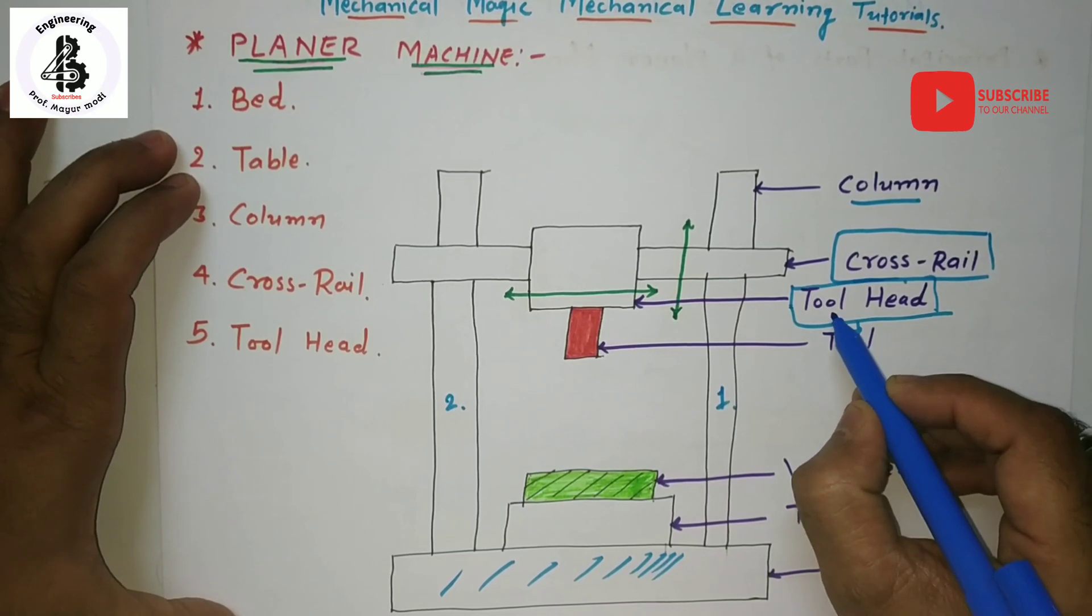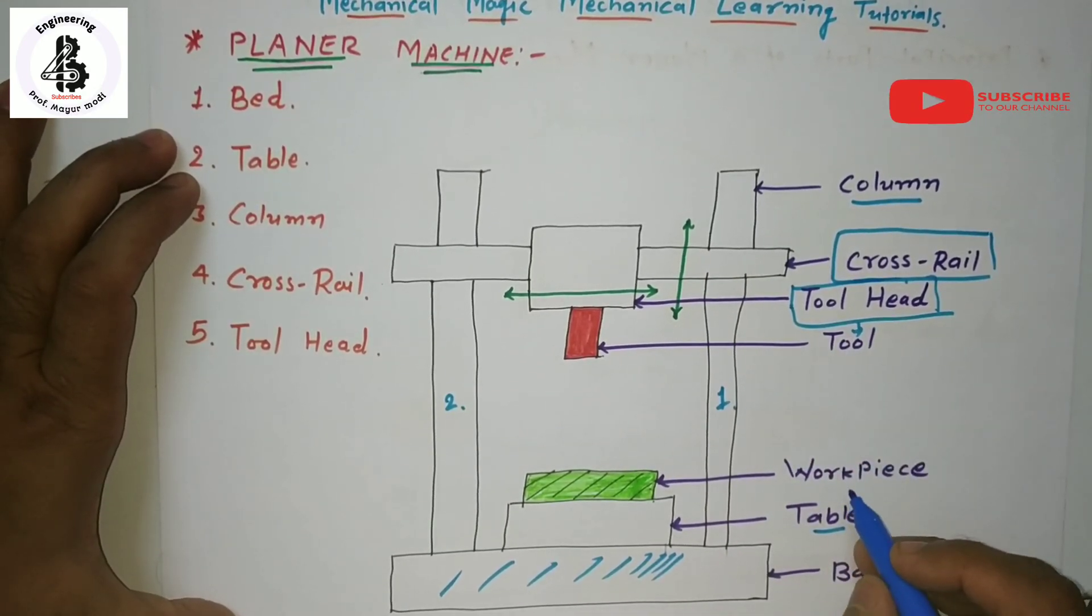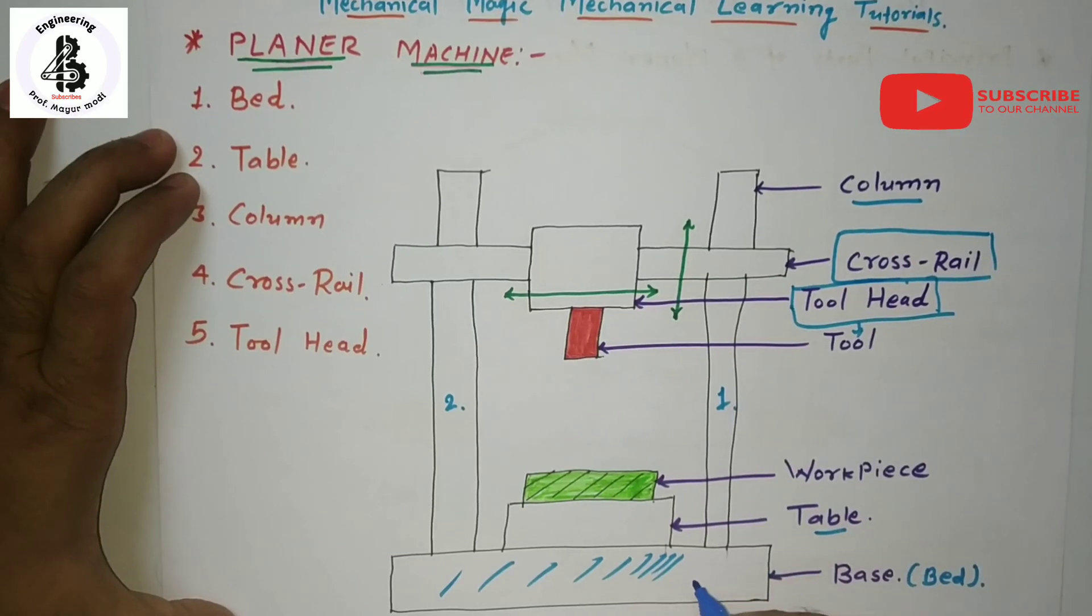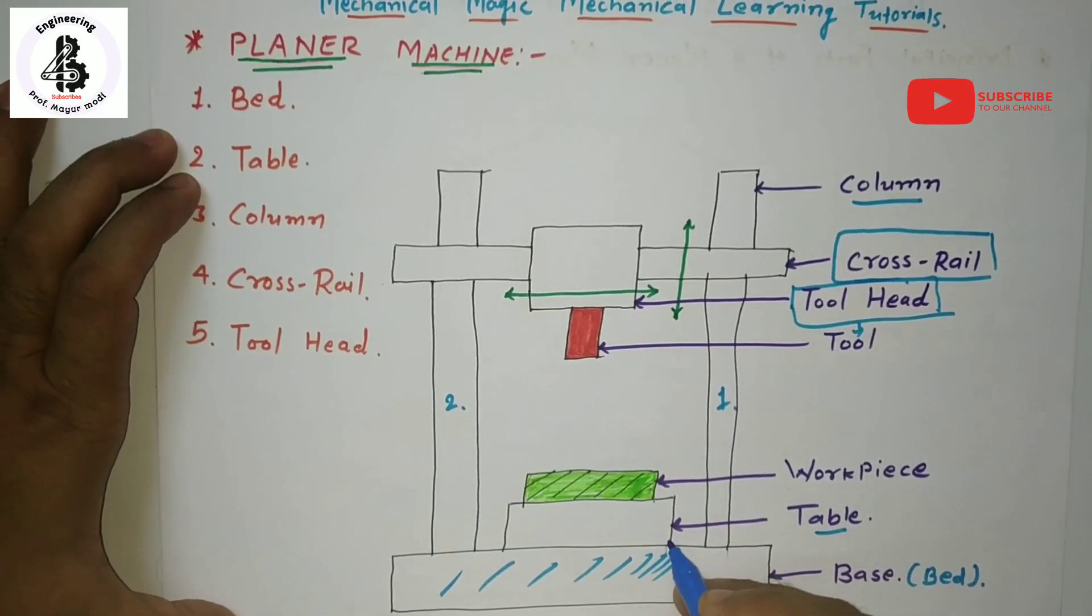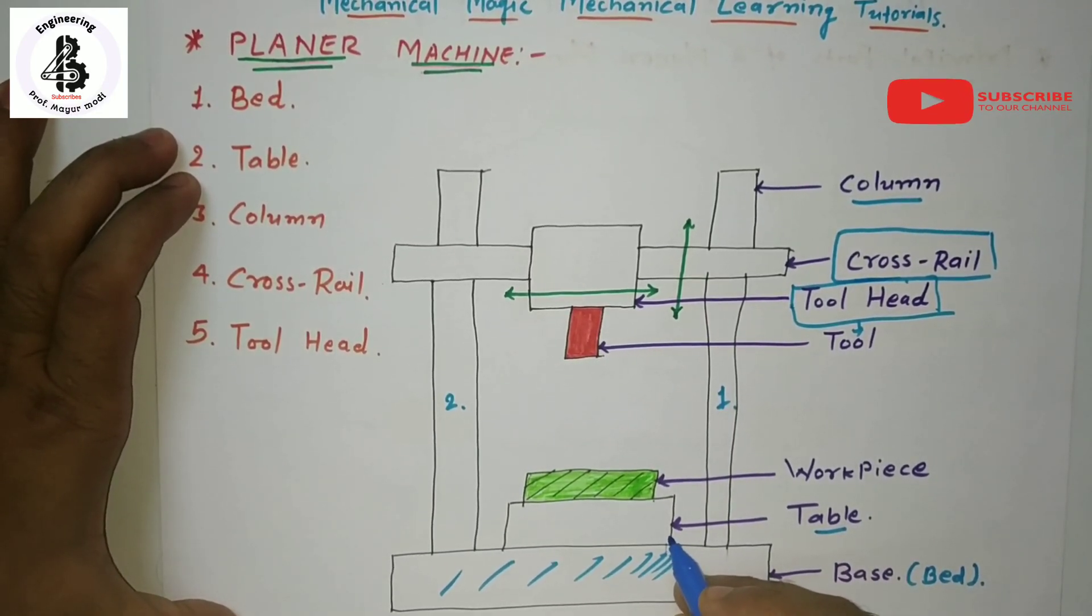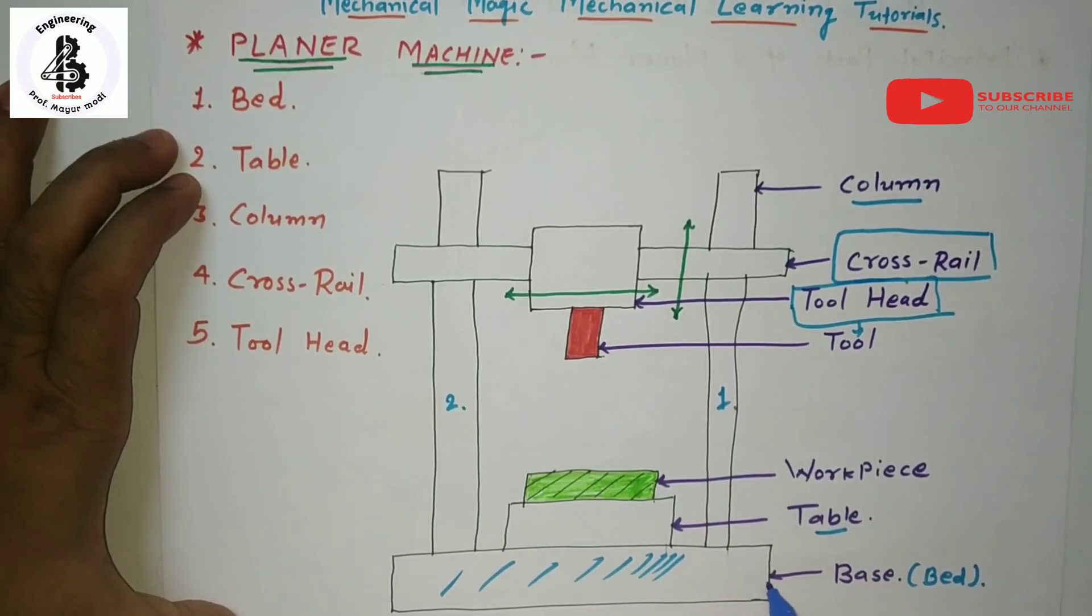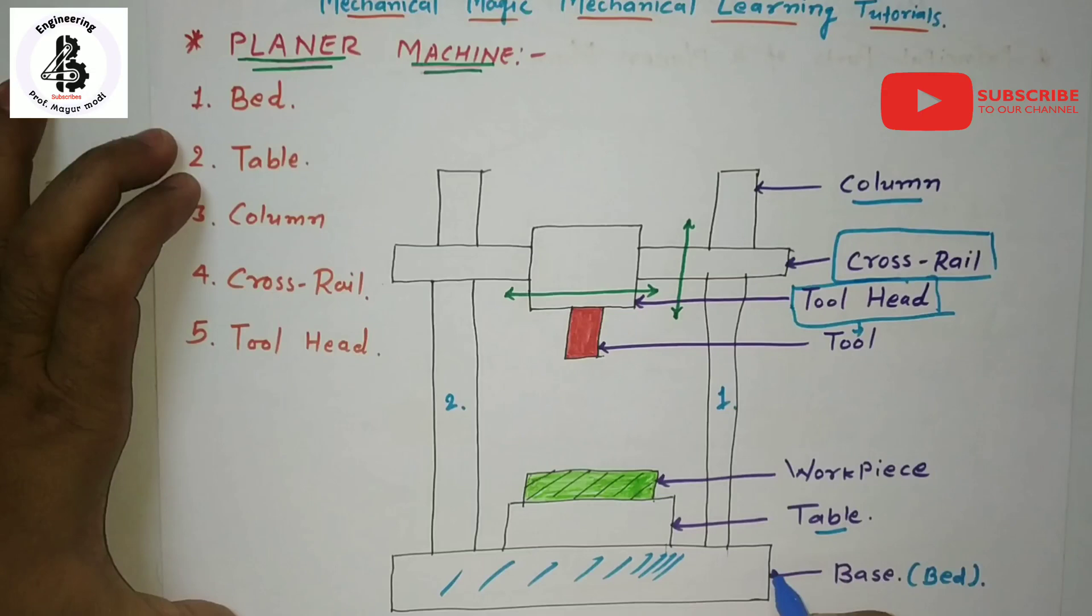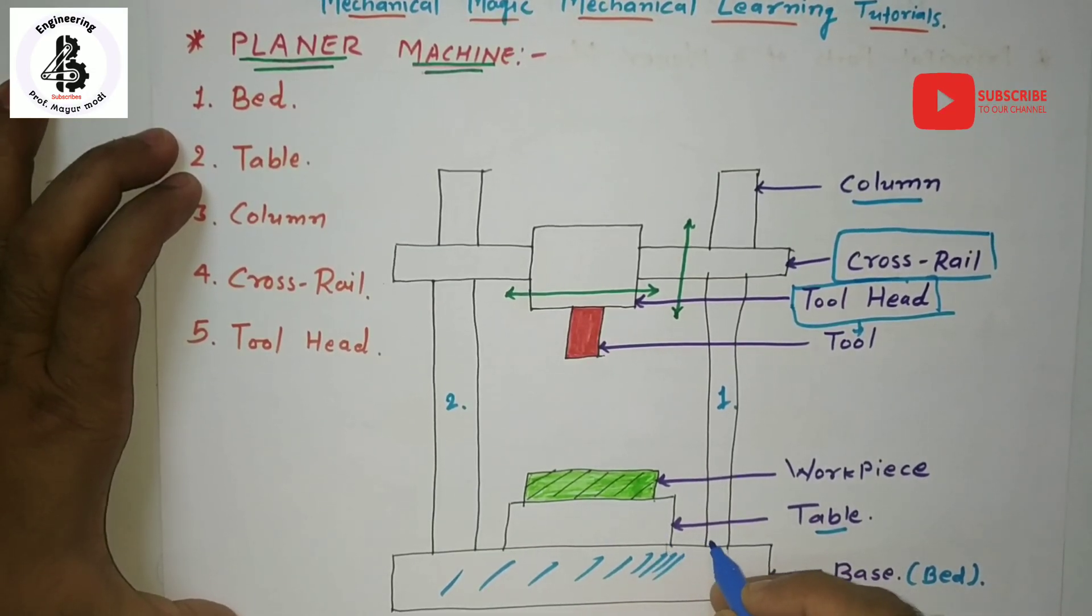The bed is made slightly longer, more than twice the length of the table of the machine. It is provided with the accuracy of the V type guideways over the entire length on its top surface, and the table slides onto that.